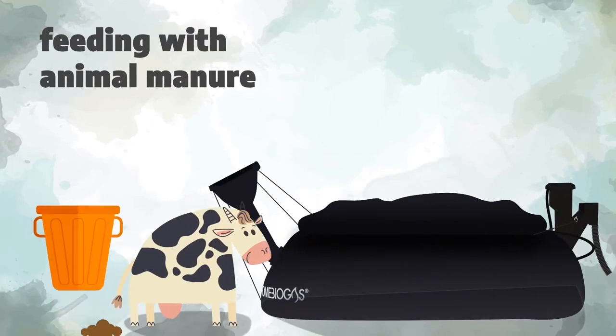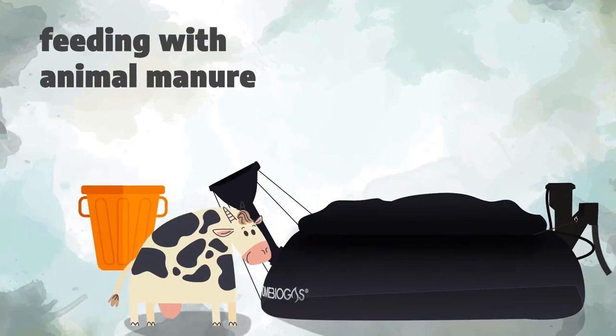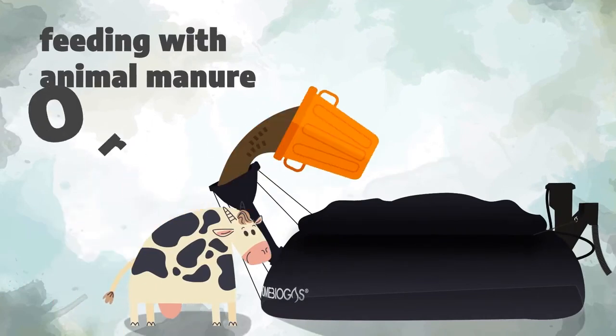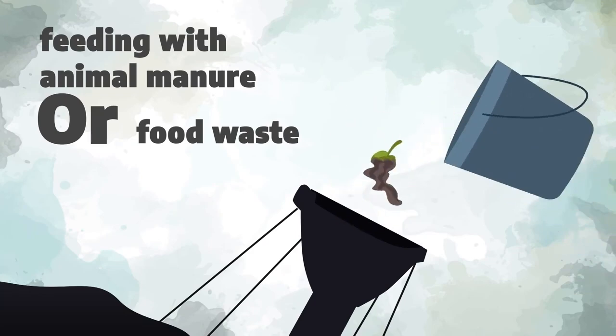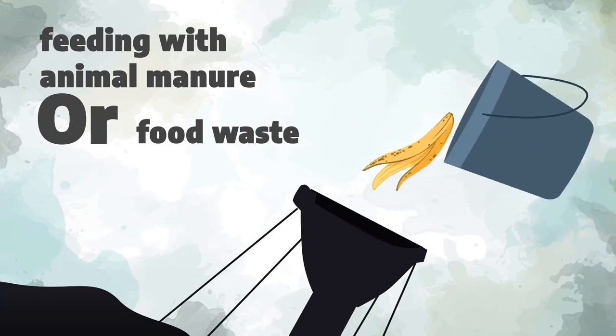When gas is used, the tank empties out, and when being fed again, this cycle starts over and over again on a daily basis.